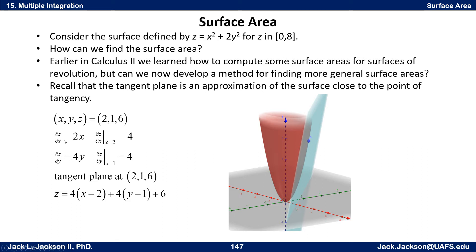To find the tangent plane, we need the partial derivative of z with respect to x, which is 2x, and the partial derivative of z with respect to y, which is 4y, and evaluate those when x is 2 and y is 1. That gives us 4 for both. The tangent plane is then 4 times (x minus 2) plus 4 times (y minus 1) plus 6. The point (2, 1, 6) is on both the surface and the tangent plane.